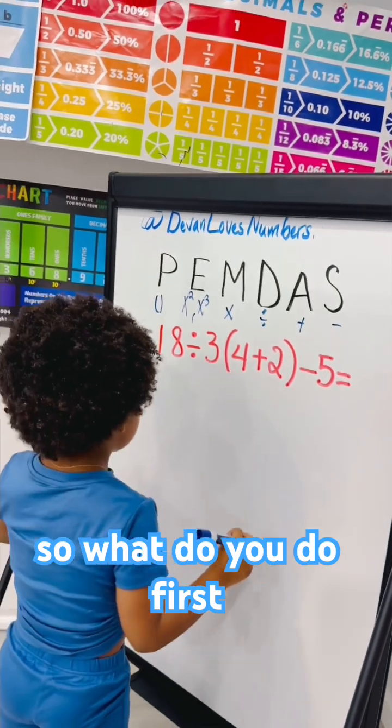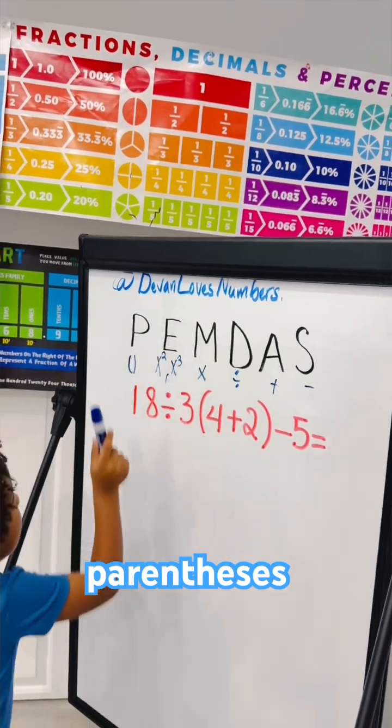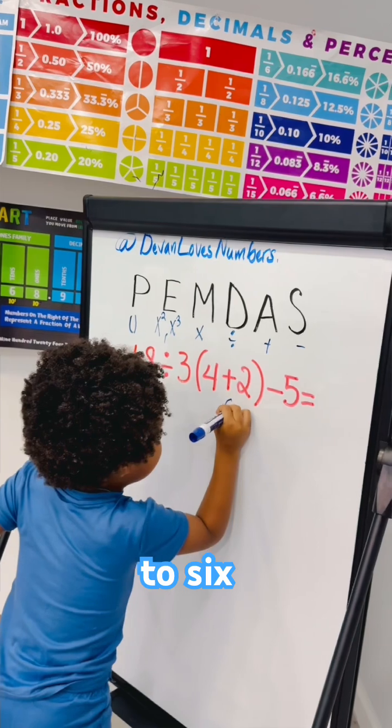Okay, so what do you do first? Parentheses. Okay. That will be equal to six.